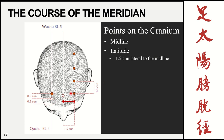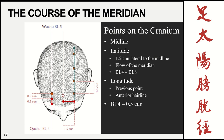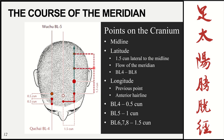The first two points are each half a cun from the hairline, and then from bladder 5 to 6 it goes one and a half cun, and that spacing of 1.5 cun applies for all remaining points. So we find the flow of the meridian at the 1.5 cun line for bladder 4 to bladder 8. Bladder 5 is half a cun from bladder 4. Bladder 6 is 1.5 cun from bladder 5, or 2.5 cun from the anterior hairline. The rest of the points are all 1.5 cun from each other.